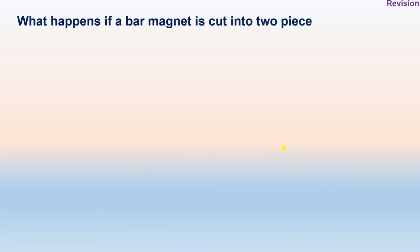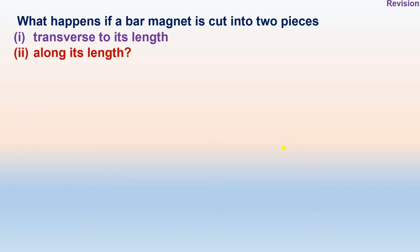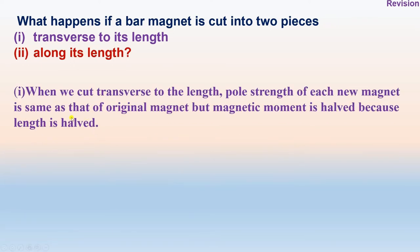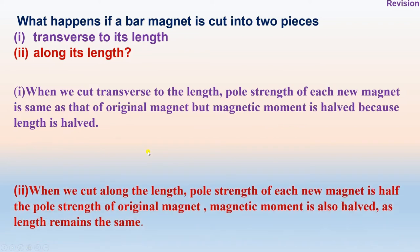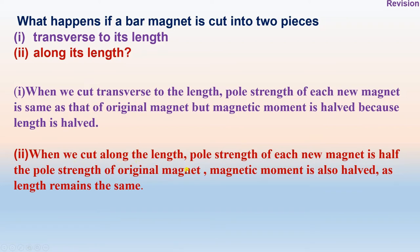In the previous lecture, we studied what happens if a bar magnet is cut into two pieces — transverse to its length and along its length. When we cut a bar magnet transverse to its length, the pole strength of each new magnet is the same as the original, but the magnetic moment is half because the length is half. When we cut along the length, pole strength is half and magnetic moment is also half as the length remains the same.